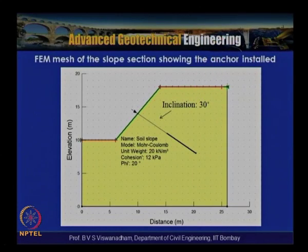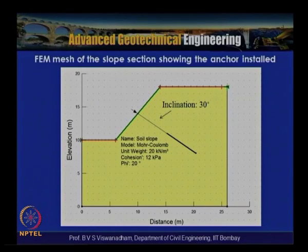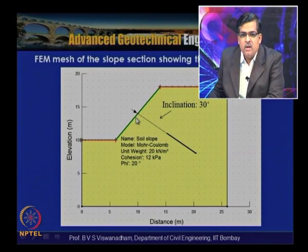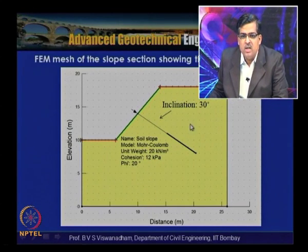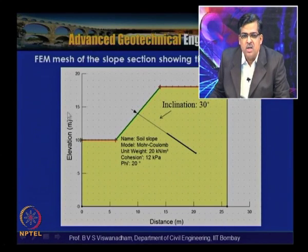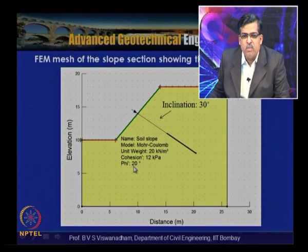This is the FEM mesh of the slope section showing the installed anchor. In this example, a 30-degree inclination of the anchor with the horizontal was considered. The slope configuration shows horizontal distance and elevation. The model uses Mohr-Coulomb criteria with unit weight 20 kN/m³, cohesion 12 kPa, and friction angle 20 degrees.